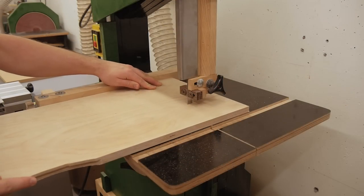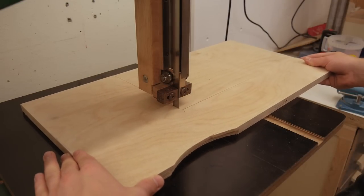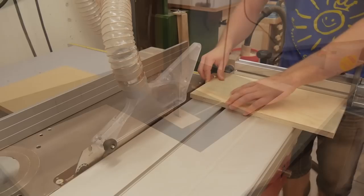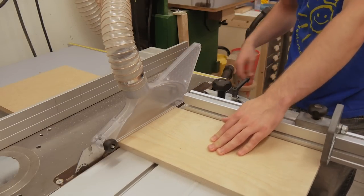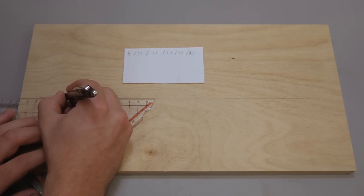I used the bandsaw first to leave the offcut as big as possible and save on wood this way. With the table saw, I then cut to final size. Now I can mark the correct spacing.